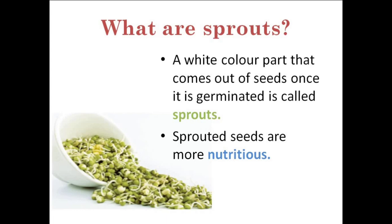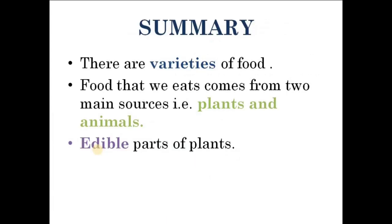So let us summarize what we have learned in Part 1. We have seen that there are varieties of food. Food that we eat comes from two main sources: plants and animals. We have also seen the edible parts of plants. Thank you.